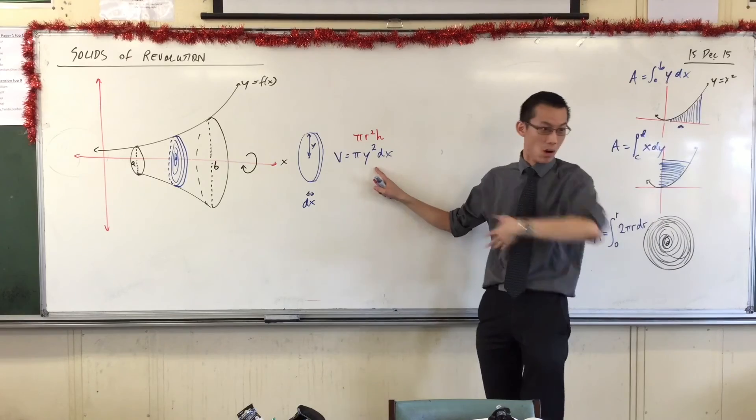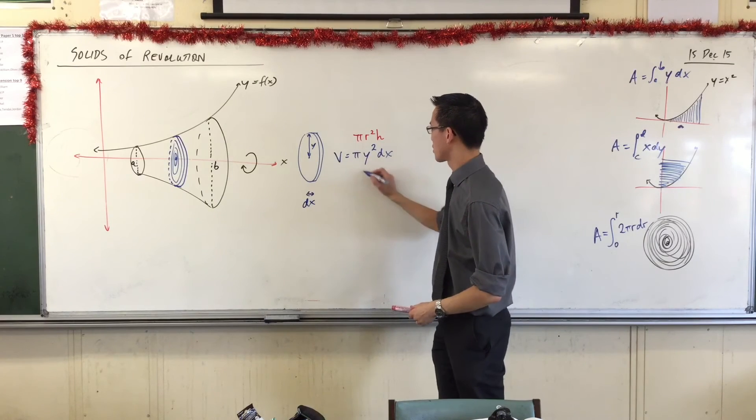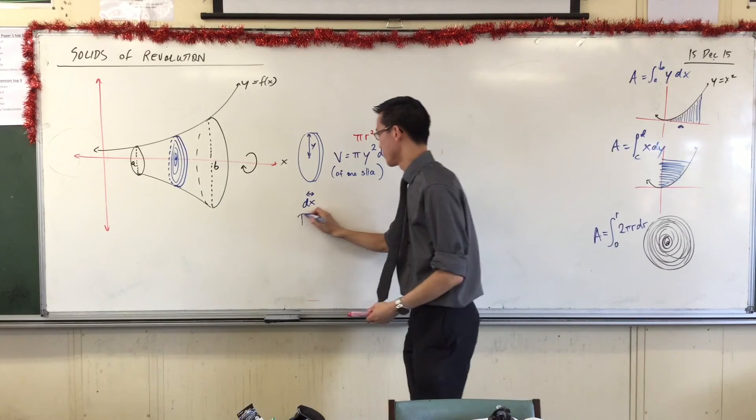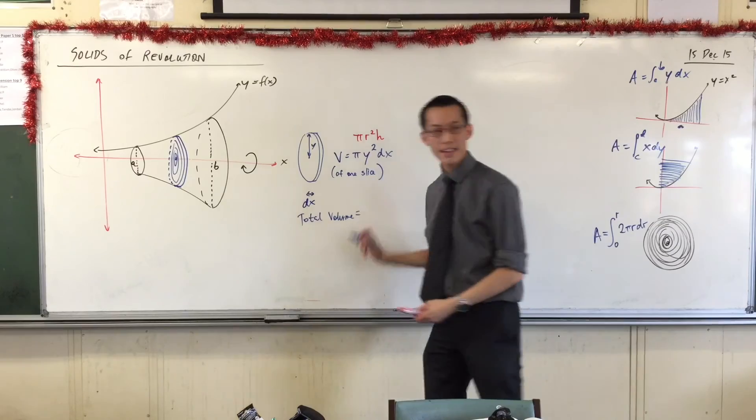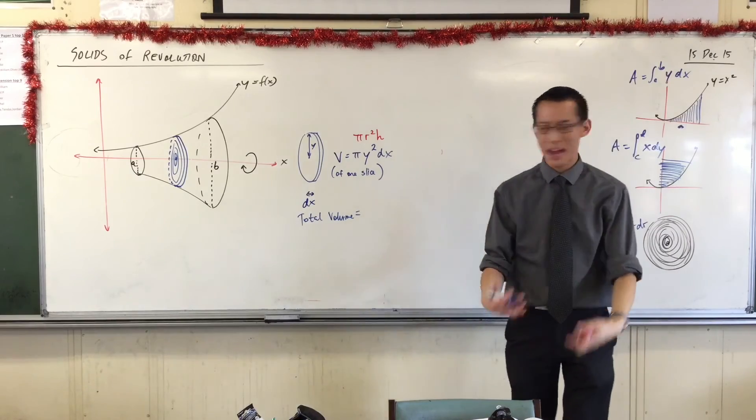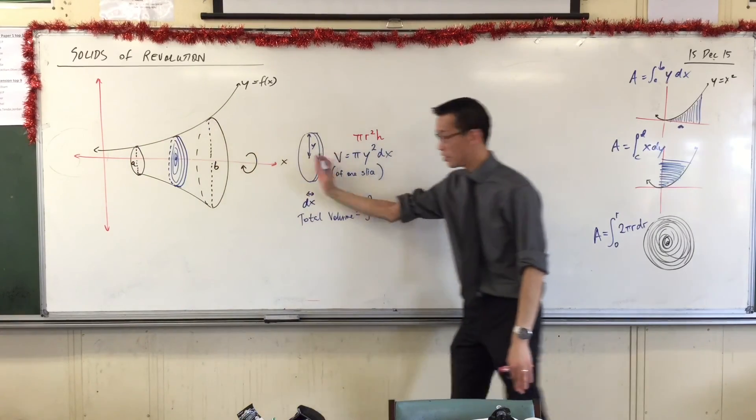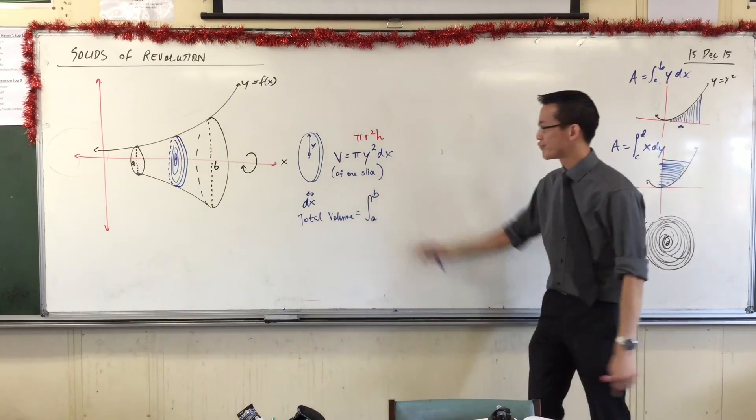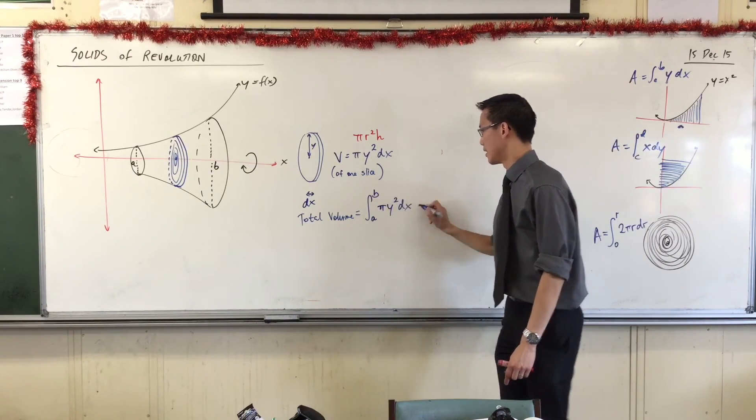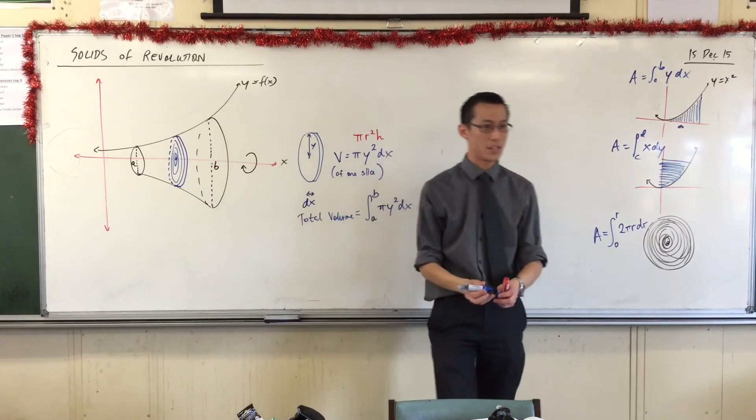So in order to get the total volume, so this is just of one slice, the total volume is all of those slices added together. And I already have created, I've gone to great lengths to create the notation and the language to describe that. I want the integral from one boundary to the other one, a to b, of all these guys, all these cylinders, pi y squared dx. Okay, this will give me the volume of this weird rotated shape. Yes?